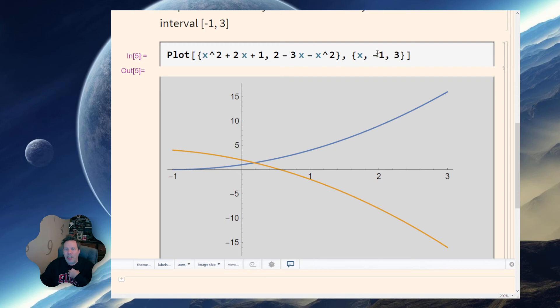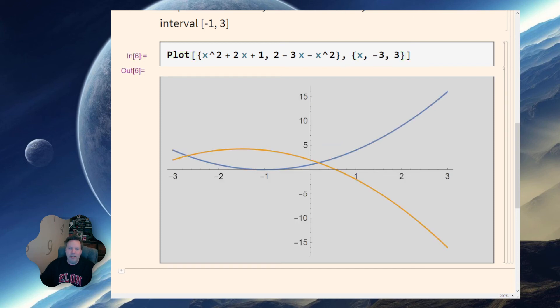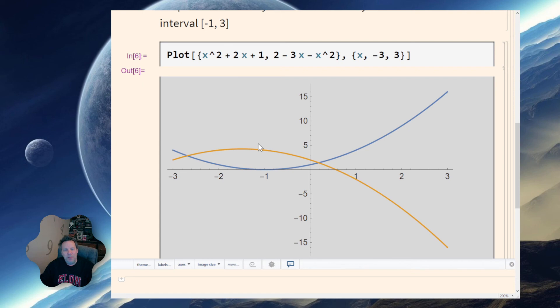So what I'm going to do is I'm going to take a guess, and for right now a guess is fine. Instead of going from negative one to three, let me go from negative three to three. Do a shift enter and I get my two intersection points there.